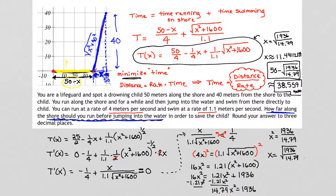I hope this makes sense. This is a long problem, so as you work your own version, keep all the steps in mind. Remember, we're trying to minimize time, so your first job is to write a time equation. Time is distance divided by rate. Once you get your time equation, find the places where you have critical numbers — that's going to help you minimize your time. Good luck, and if you have any questions at all, don't hesitate to reach out.